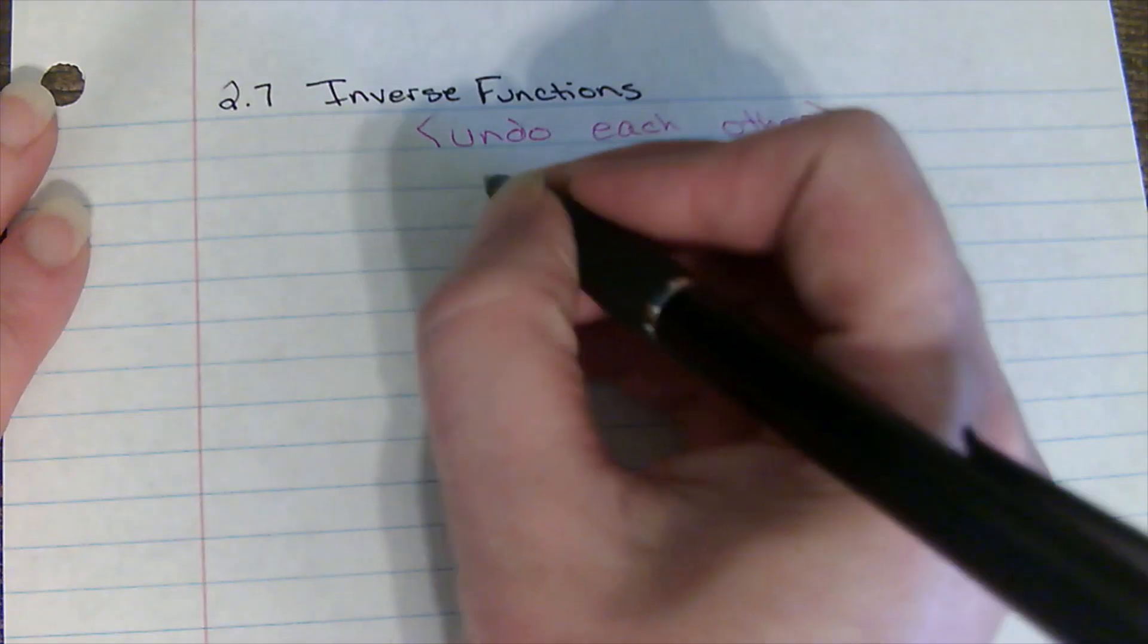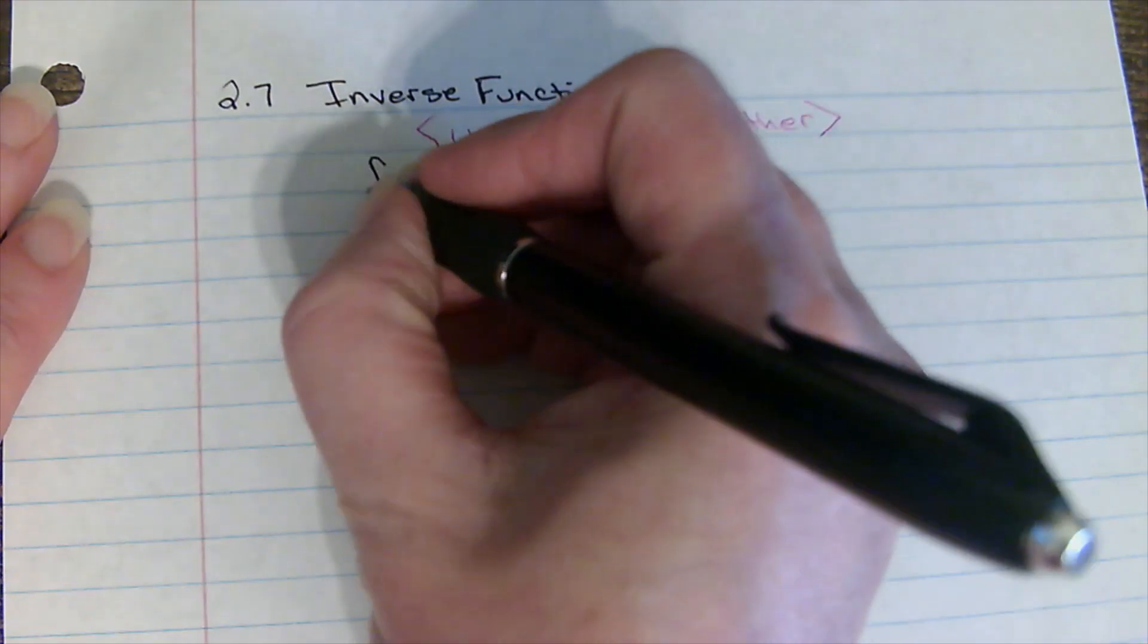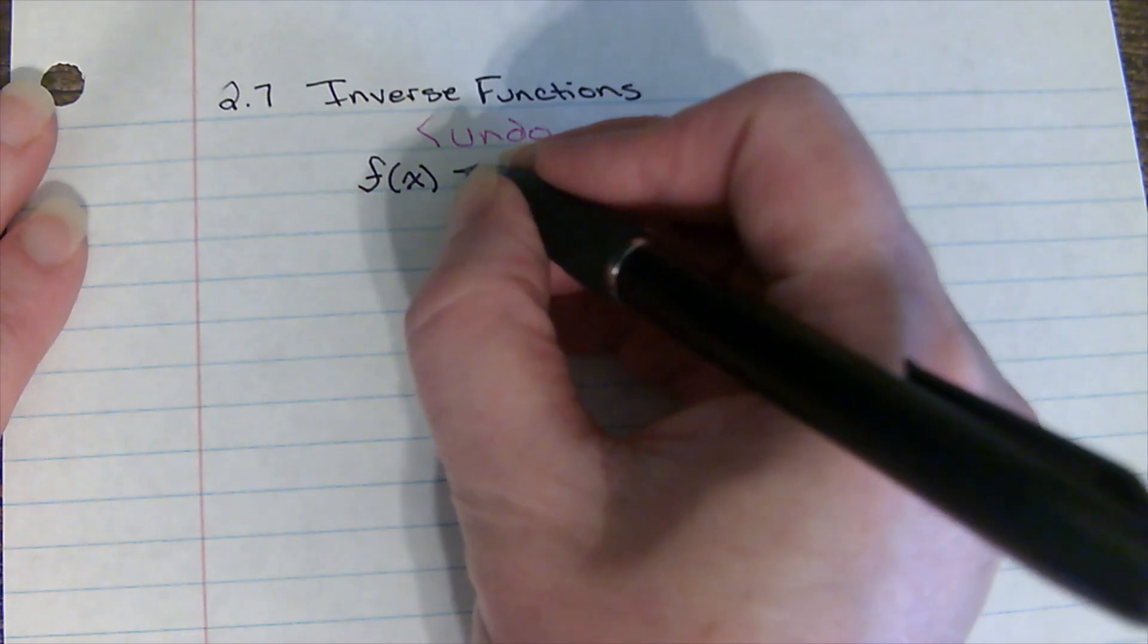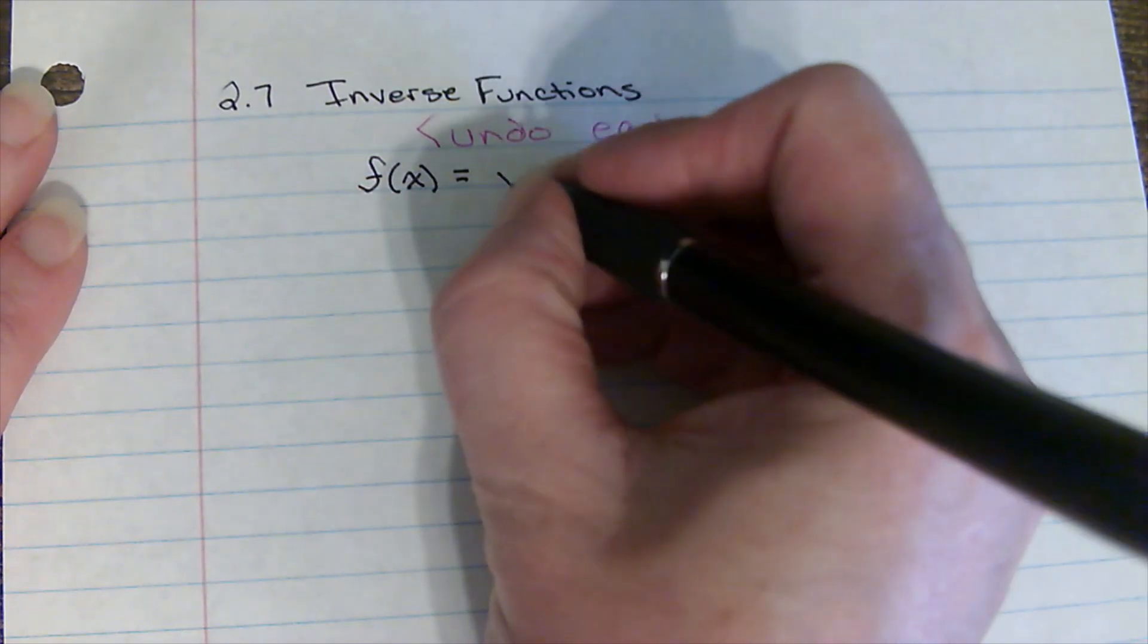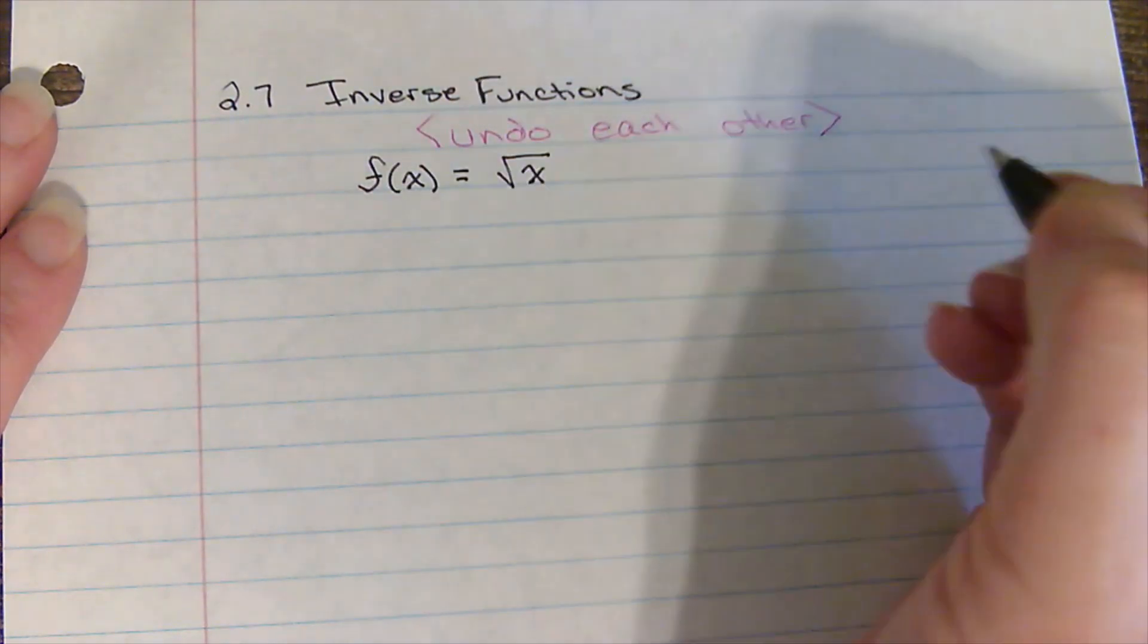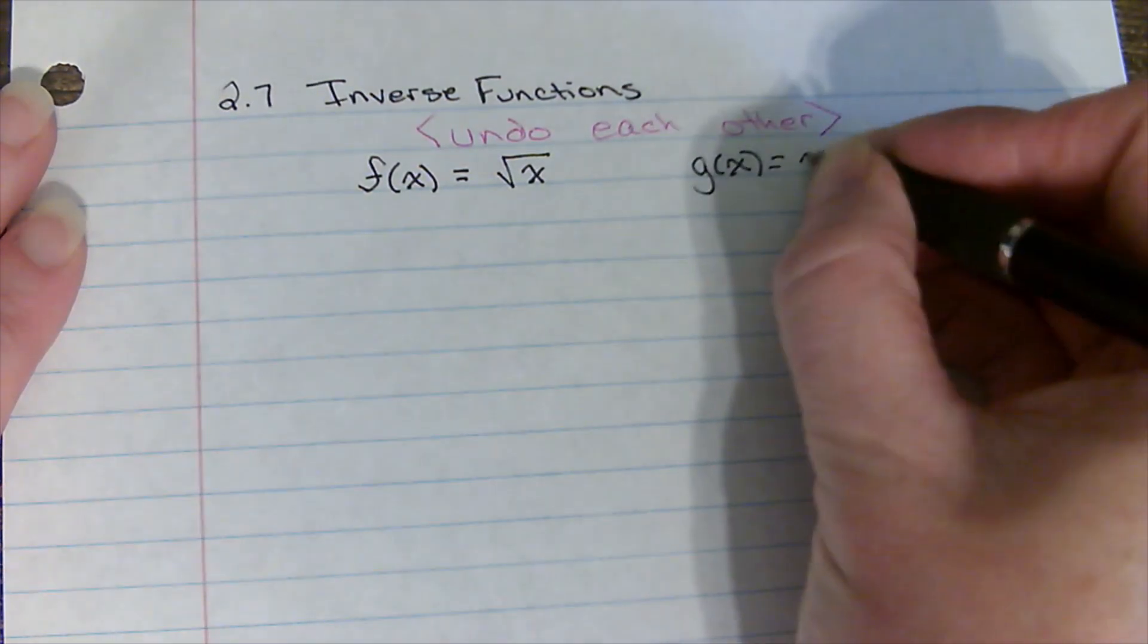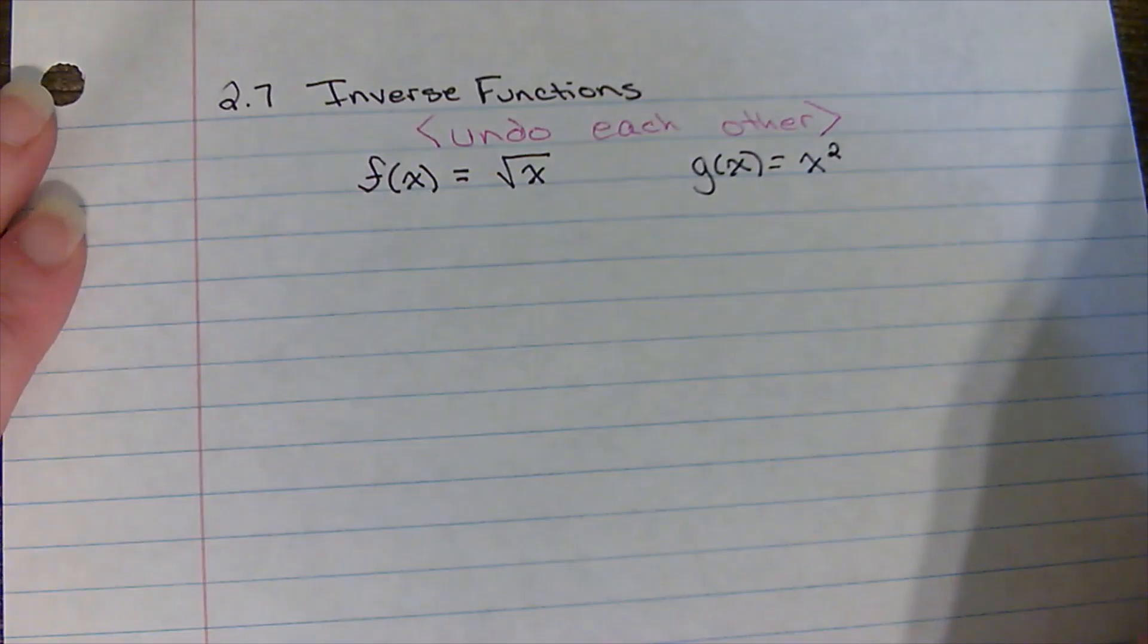What would be the inverse of, let's just say, if I had the function square root of x? Well what would undo the square root of x? Well that would be x squared. They undo each other.